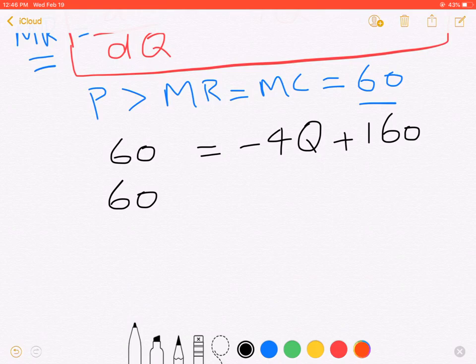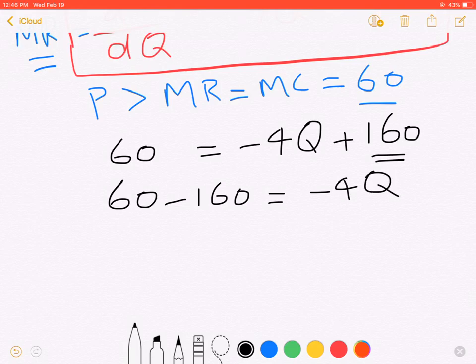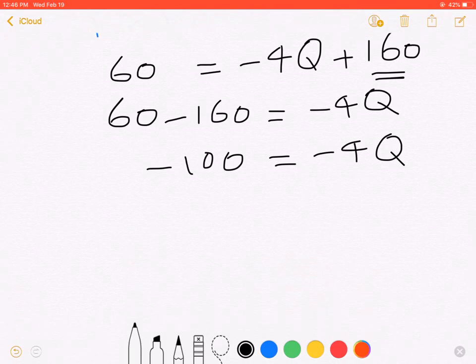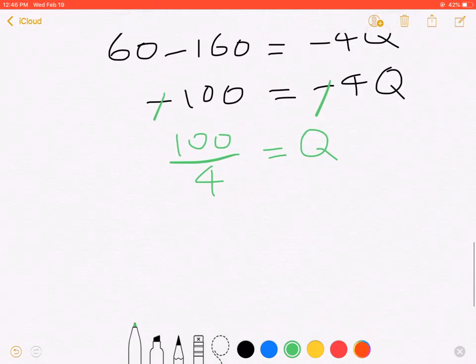So this is 60, this 160 will come on this side. And the symbol will change of course. And this will give you -100 = -4 × Q. So the negative sign of this will be cancelled out by a negative on the right hand side. So what I get is 100/4 in order to find the Q value. And the Q turns out to be 25. 100 divided by 4.